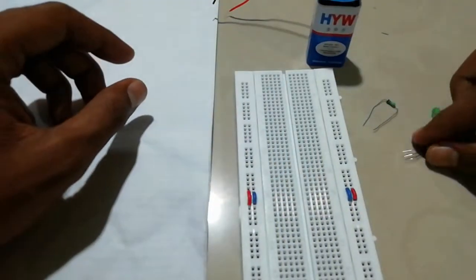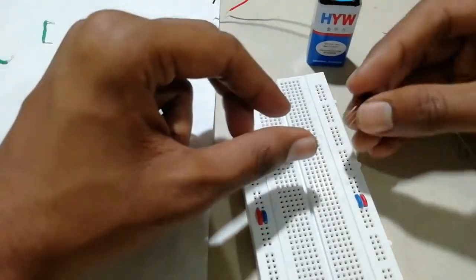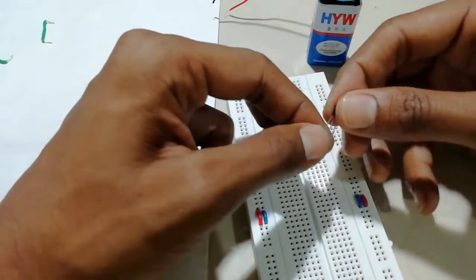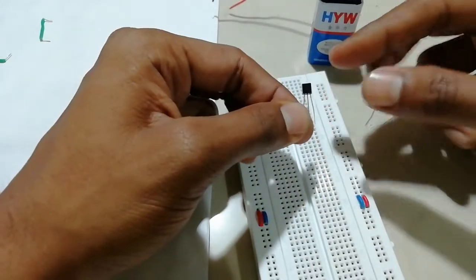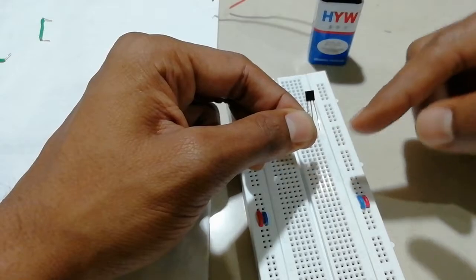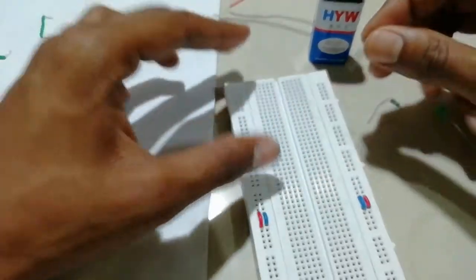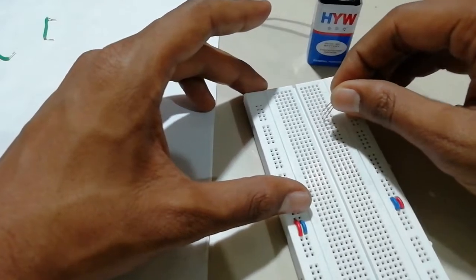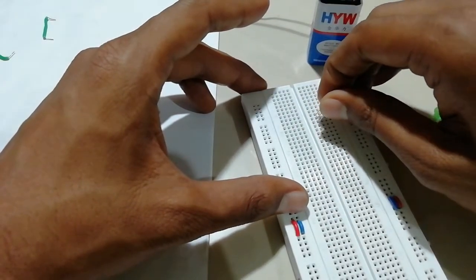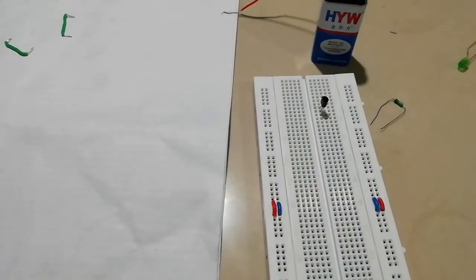First, we will place our BC547 transistor on the breadboard. Let me tell you the pin configuration of the transistor. If you see from the front, the right one is emitter, center one is base, and the left one is collector.